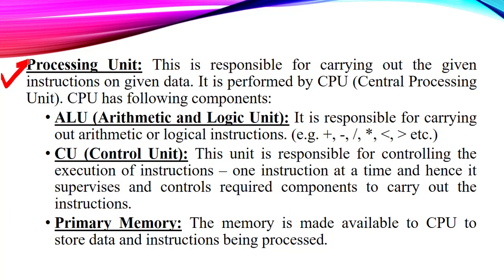Next we have the most important and main unit — the processing unit. This processing unit is generally responsible for all the operations that we do, all the outputs that we get, and everything that we are doing with our computer. It is responsible for carrying out the given instructions on the given data. Whenever we input something, this processing unit works on that input and then it returns the output to the user. This processing part is done by the CPU.